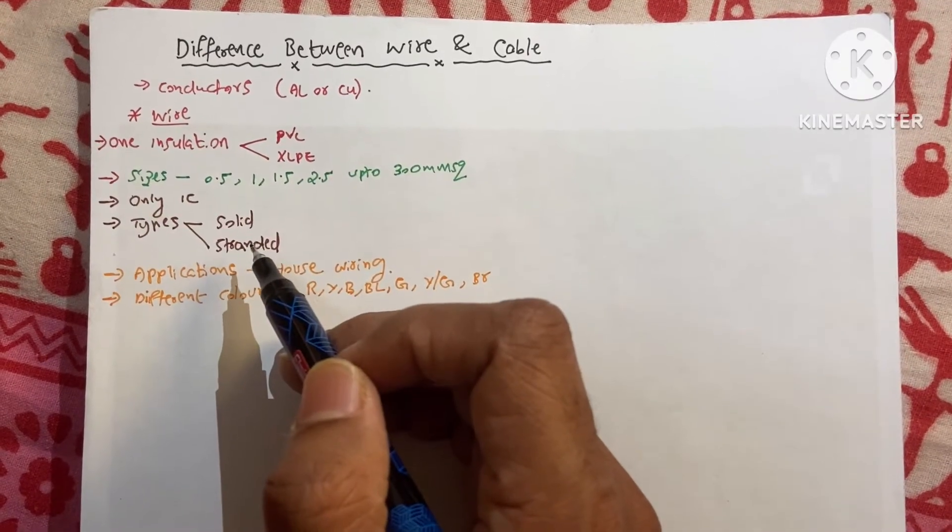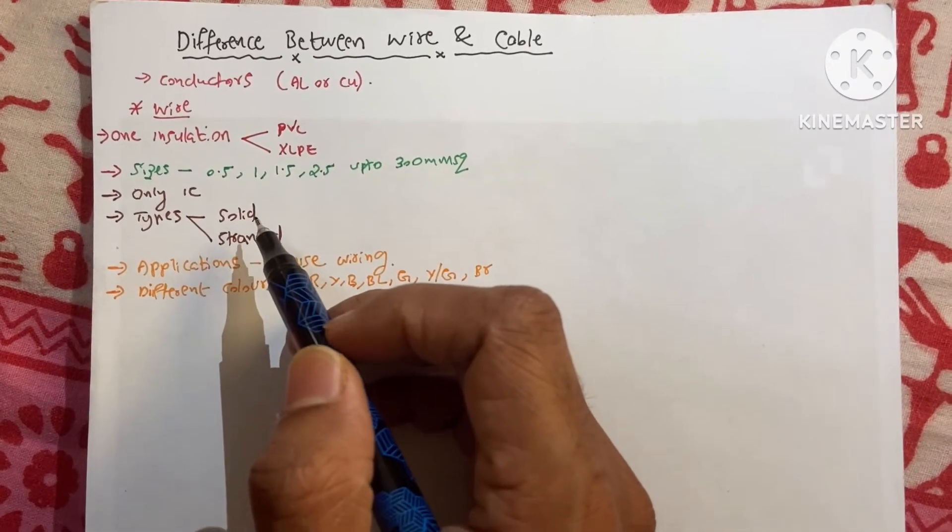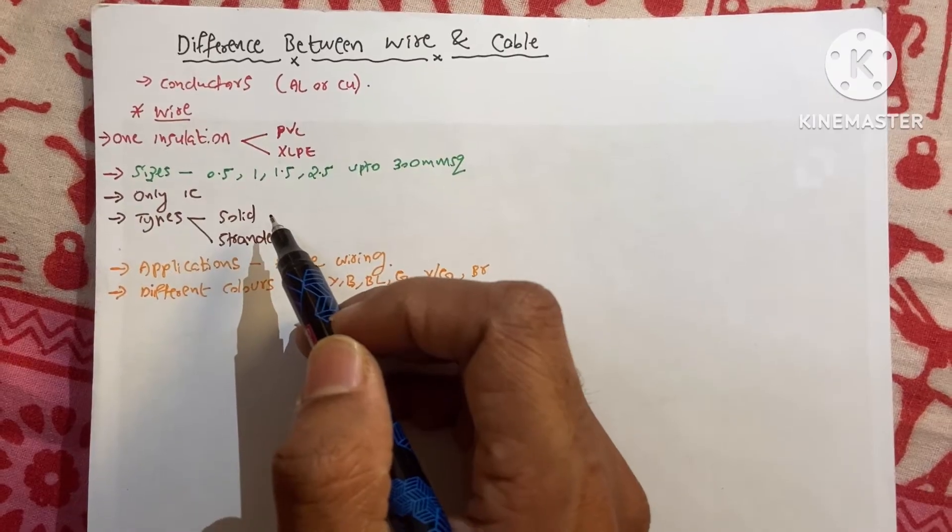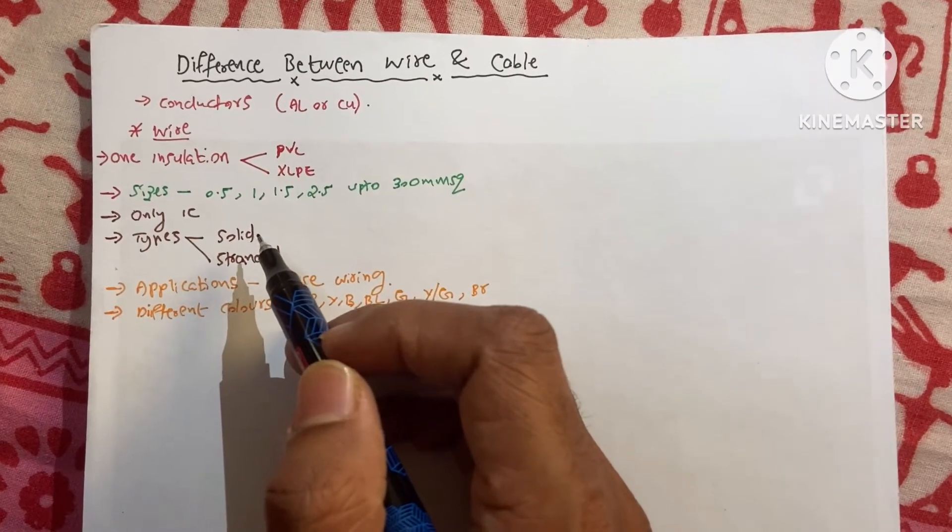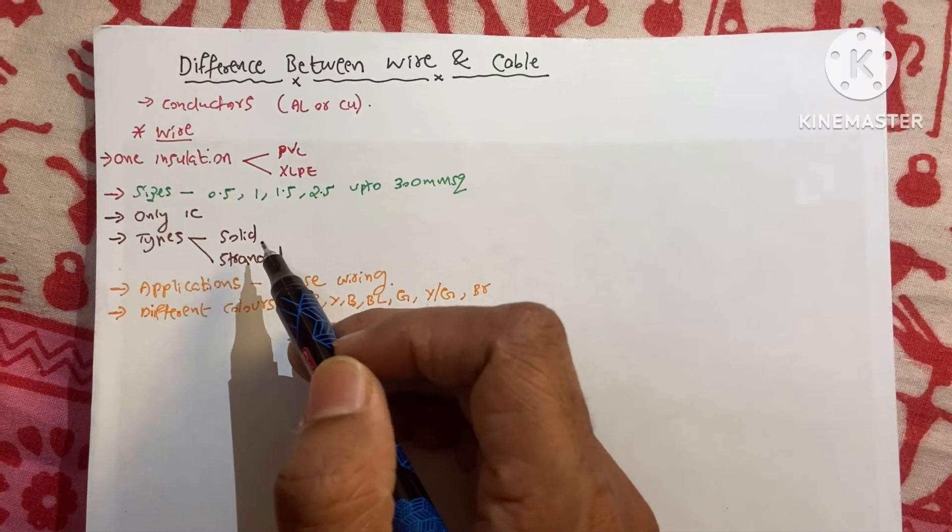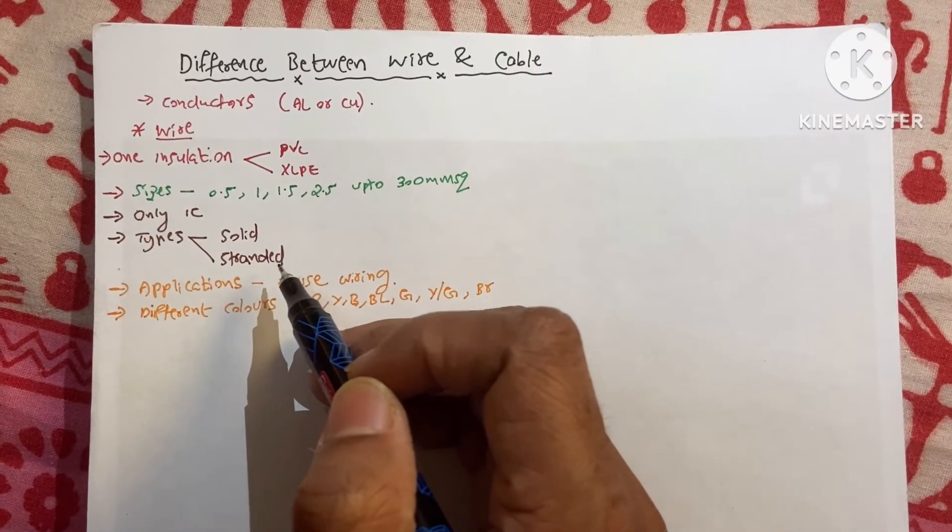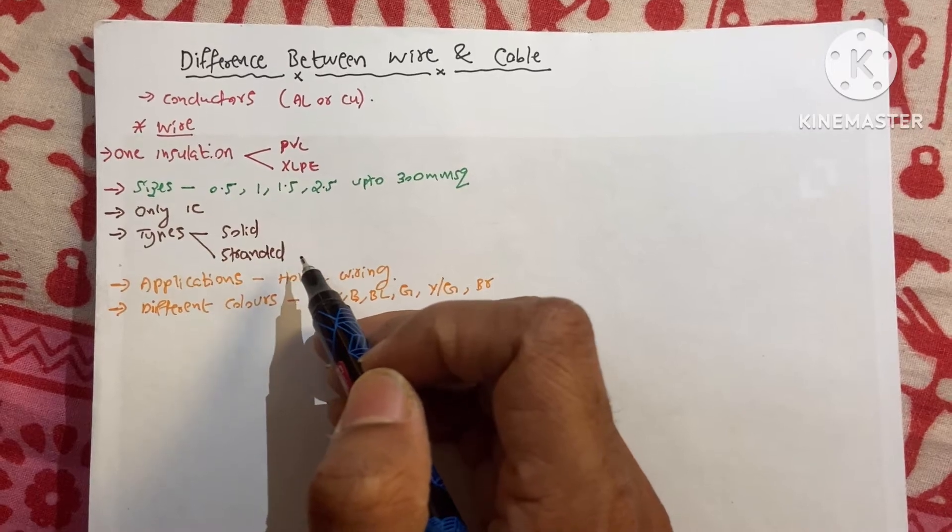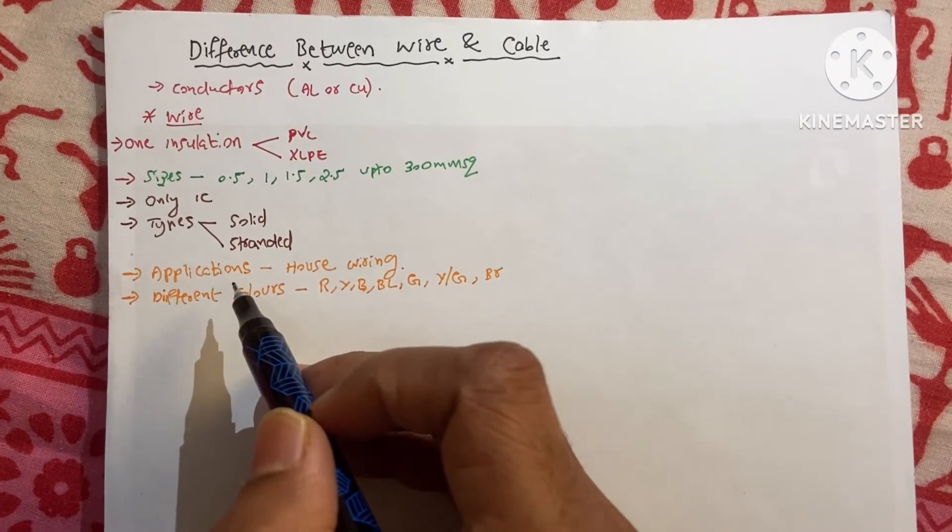The main difference of this one is ductile strength of this solid is very less. We can't make it more bend and twist. It will easily break up. But the stranded is more flexible. It will not be break up so quickly.